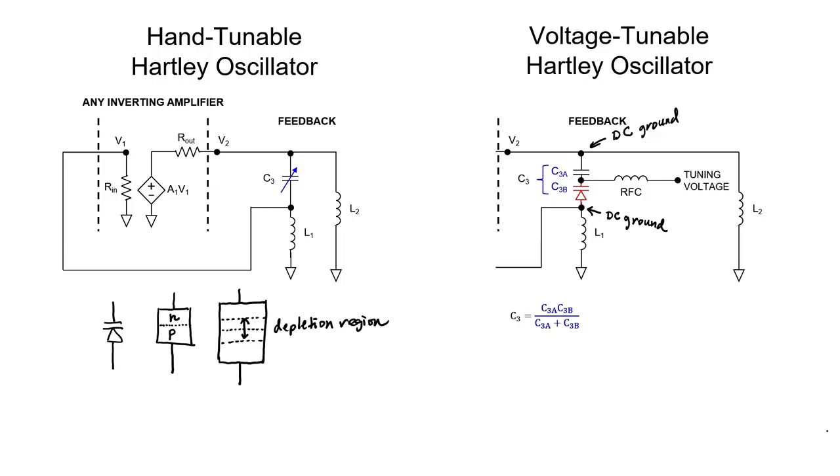What we have now is a diode whose parasitic capacitance depends on the applied voltage. That's what a varactor is, and that's what we're going to use in this circuit. We now have a situation where a tuning voltage applied to this pin will change the capacitance of C3B, which then changes the effective capacitance of capacitor C3, which then changes the frequency of oscillation of the Hartley oscillator.